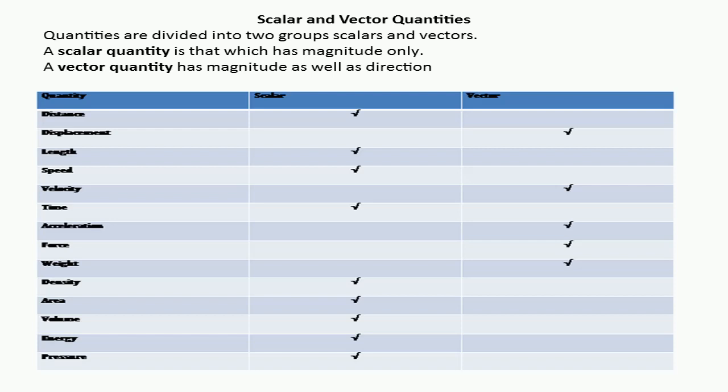We can say that physical quantities can be divided into two groups. The first group of the physical quantities is scalar quantities, and the second group of the physical quantities is vector quantities.